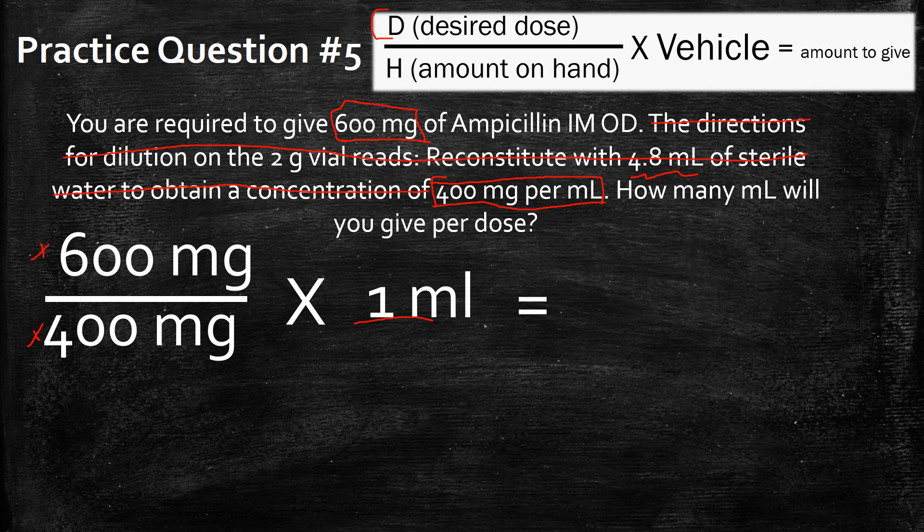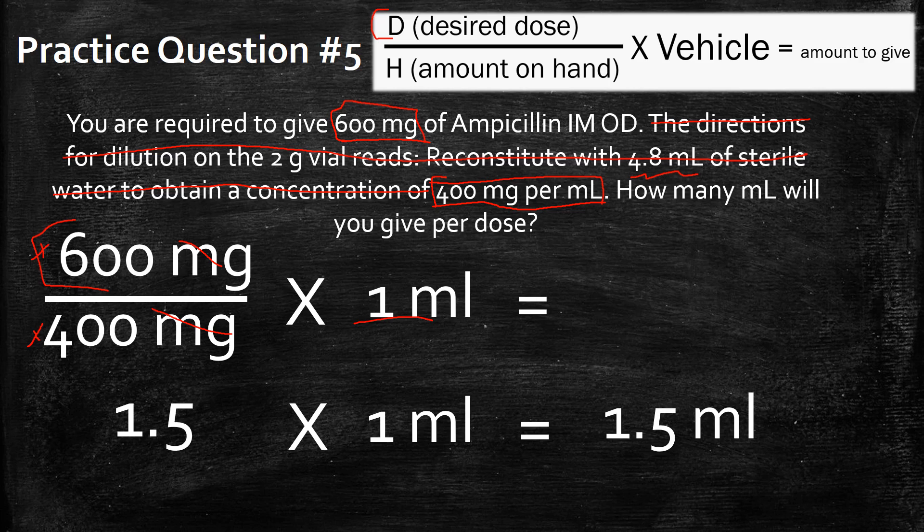Now that you have it all filled out, let's solve it together. 600 divided by 400 is going to give you 1.5 milligrams. Scratch out. Multiply that by one milliliter and you're going to get 1.5 milliliters. So you're going to give this individual 1.5 milliliters in order to give them 600 milligrams of this medication.